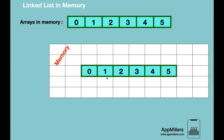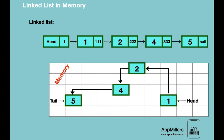We have a linked list with four nodes. The first node is 1 pointed by head, the second node is 2 pointed by 1, the third node is 4 pointed by 2, and the fourth node is 5. The last node is always pointed by tail. It can be easily seen that the elements of linked lists are not located contiguously in memory — their location is random. As we create a new node, it will be created randomly in memory and linked to available nodes.